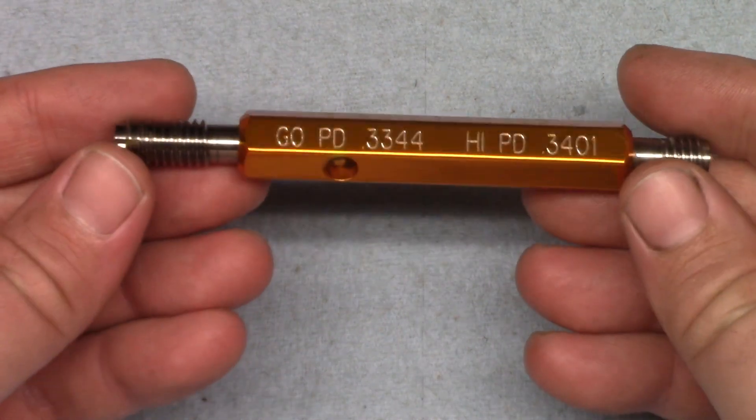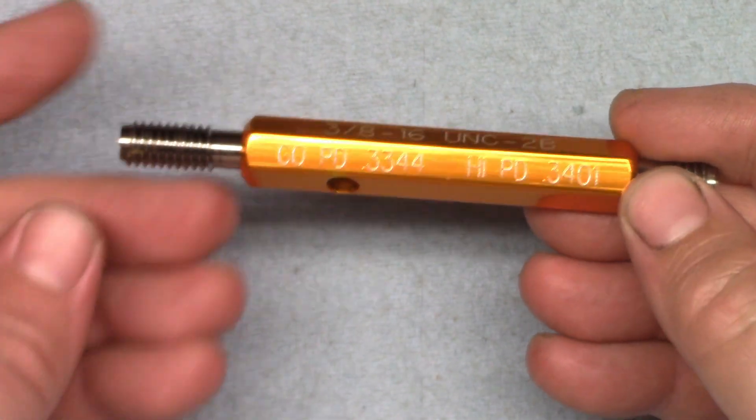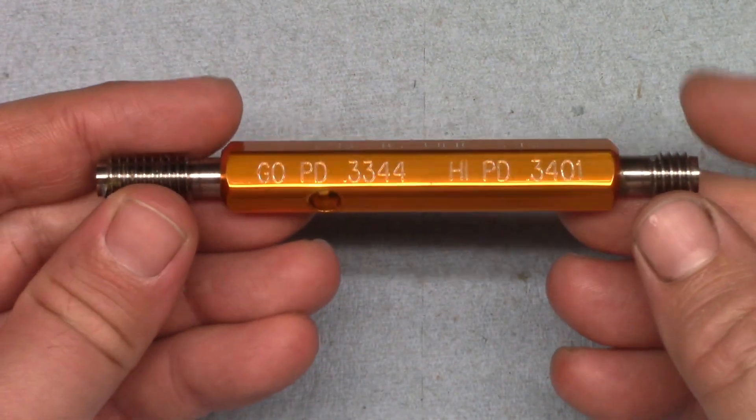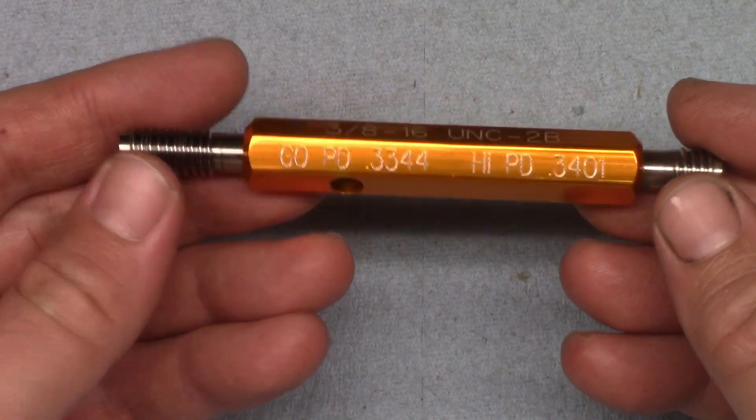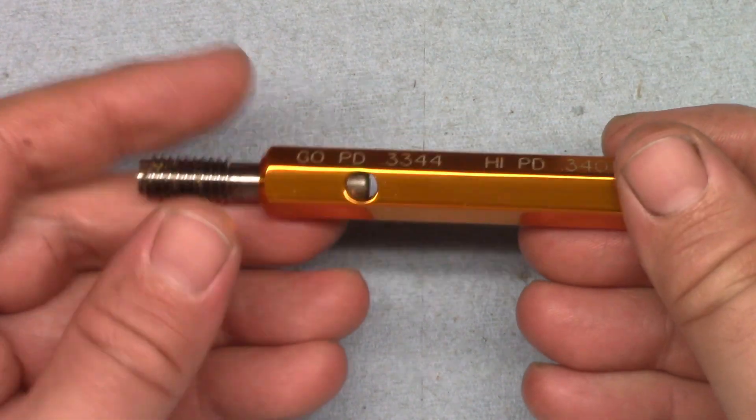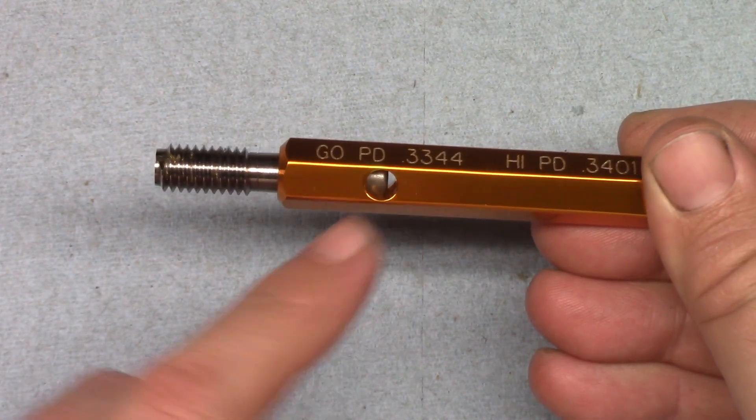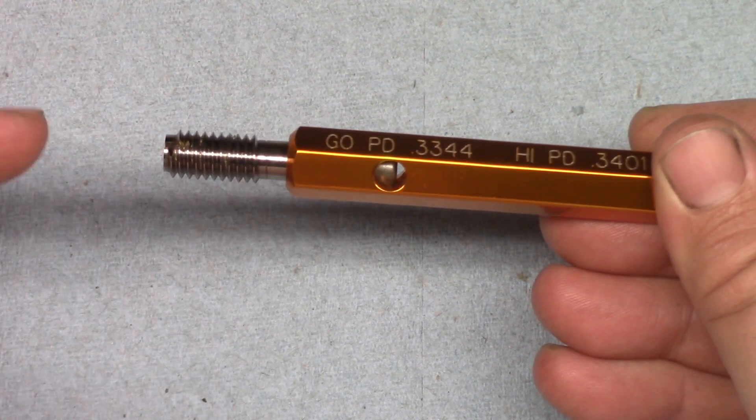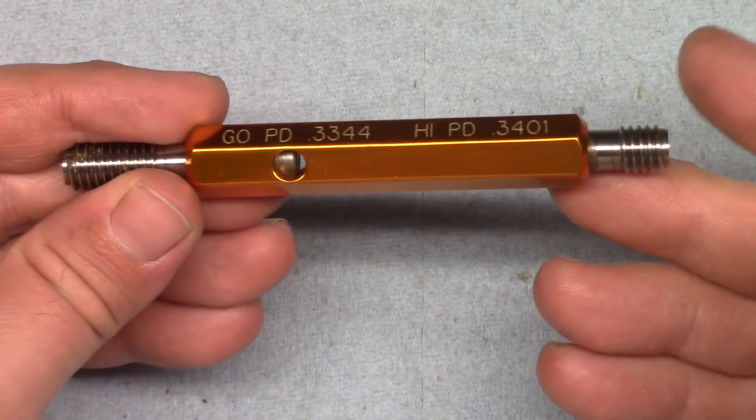These are not adjustable, but they are replaceable when they wear. Each end is held in with a taper, similar to Morse Taper tooling. You can use a drift through this hole to remove the go gauge, and then pop out the no-go gauge with a long punch through the handle.